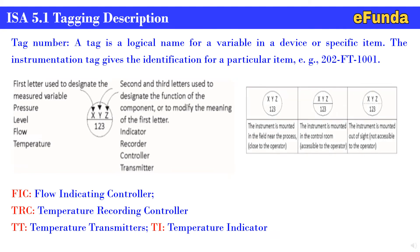Similarly, one can see another table where we have indicated three items. First item X, Y, Z, 1, 2, 3 indicated in a circle - the instrument is mounted in the field near the process, close to the operator. Second, with a circle with a centerline - the instrument is mounted in a control room accessible to the operator. Third figure, one can see a circle with a dotted line at the center - the instrument is mounted out of sight, not accessible to the operator.